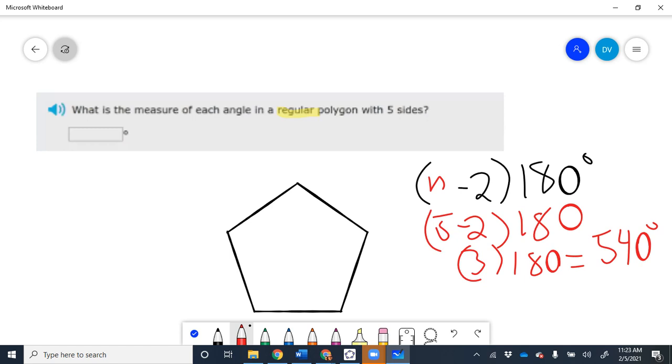So there's five angles, and if they all add up to 540, then to find out how much each one is, they're all the same, we just have to divide 540 by 5. If it was 6 sides, we would divide by 6. So what is 540 divided by 5?